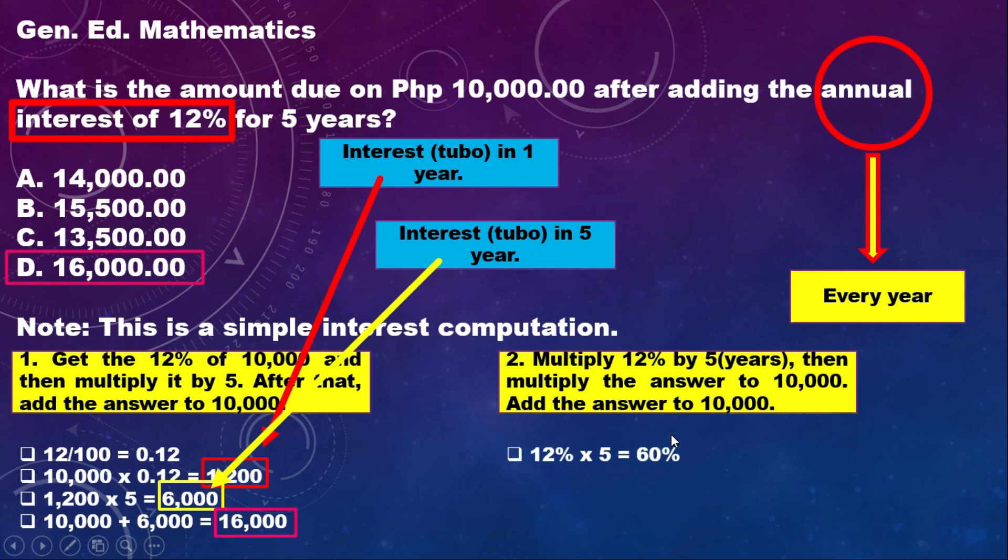12% times 5, because it's 5 years, is 60%. So what you borrowed, 10,000 for 5 years, has an interest of 60%.